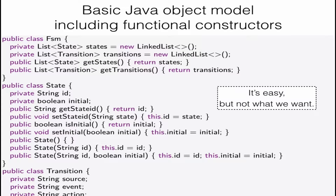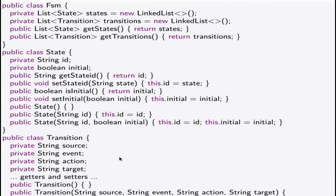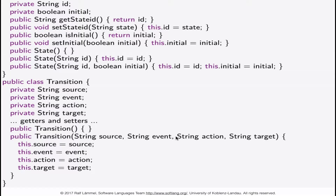Let's implement a simple object model that serves this API. We have classes FSM, State, and Transition with all the appropriate attributes, getters, and setters. We also have functional constructors for State and Transition so that we can conveniently construct our FSM. This is the baseline implementation.